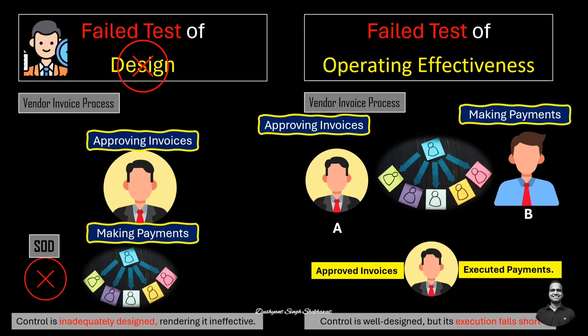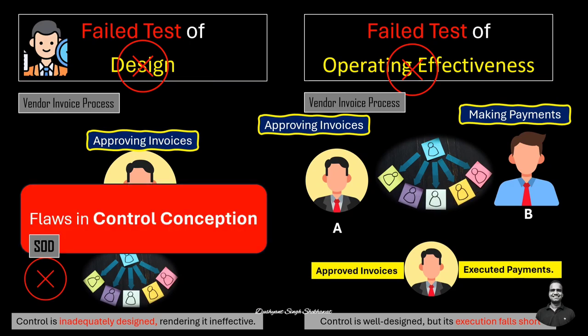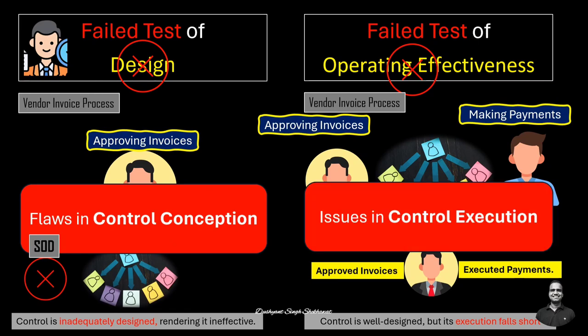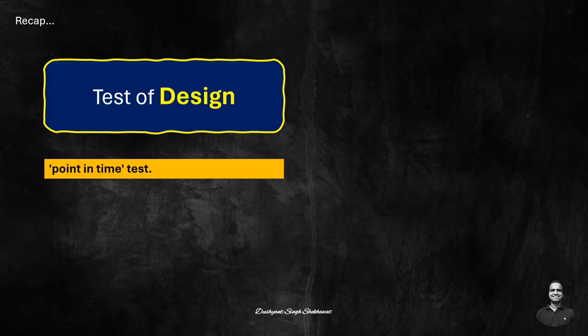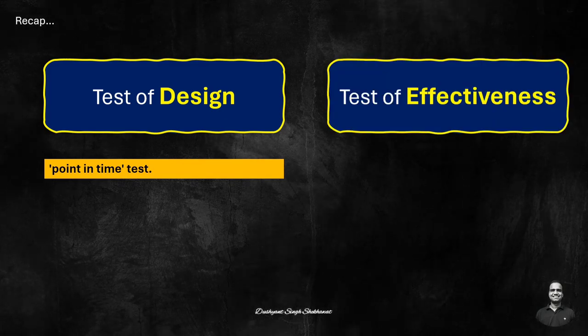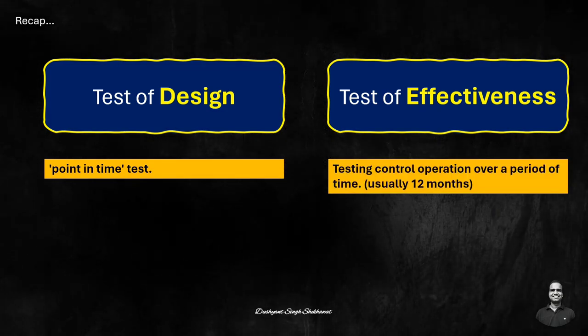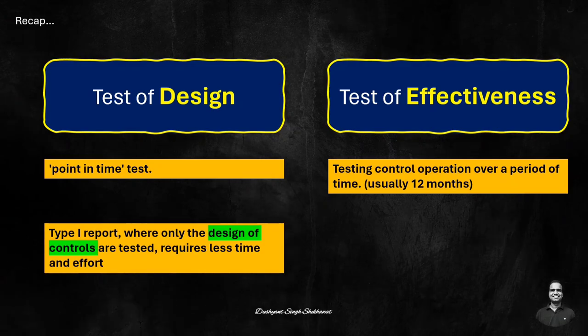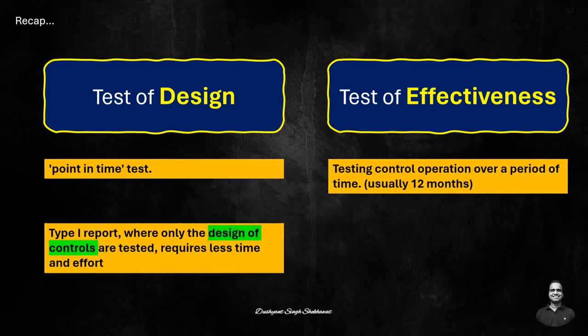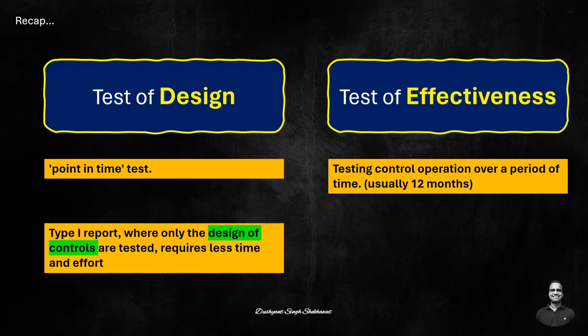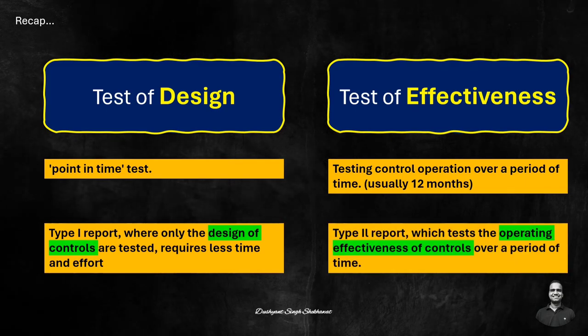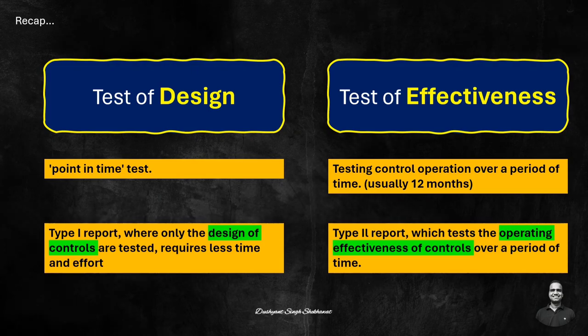To wrap it up: a failed test of design highlights a flaw in control conception, while a failed test of operating effectiveness reveals an issue in control execution. Testing the design of a control is a point-in-time test, while testing operating effectiveness covers control operation over a period of time. A Type 1 report, which only tests control design, requires less time and effort compared to a Type 2 report, which tests operating effectiveness over a period of time.